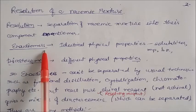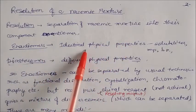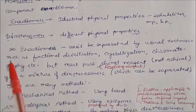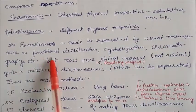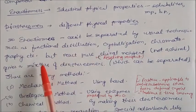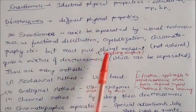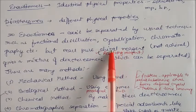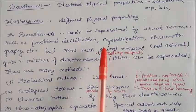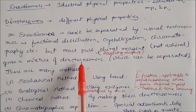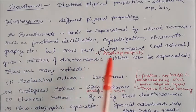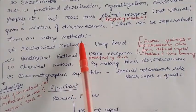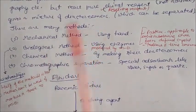For diastereomers with different physical properties, we can use fractional distillation. But in the case of enantiomers, due to identical physical properties, it is very difficult to separate them. Enantiomers cannot be separated by the usual techniques like fractional distillation, crystallization, or chromatography. However, enantiomers can react with a chiral reagent — this reagent is called the resolving reagent. It should be chiral, and when the enantiomer reacts with a chiral reagent, you will get a mixture of diastereomers.